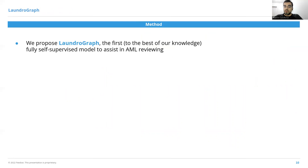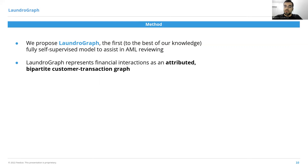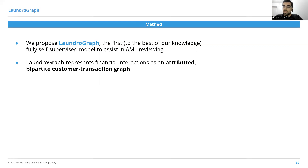We propose LaundroGraph, which is, to the best of our knowledge, the first fully self-supervised model that assists in AML reviewing. We represent the financial transactions as an attributed directed bipartite customer transaction graph. Attributed means the node types have feature sets. Bipartite means one node type only interacts with the other node type. And it is directed, so we can recover the direction of the transfer of funds and the flows of money.